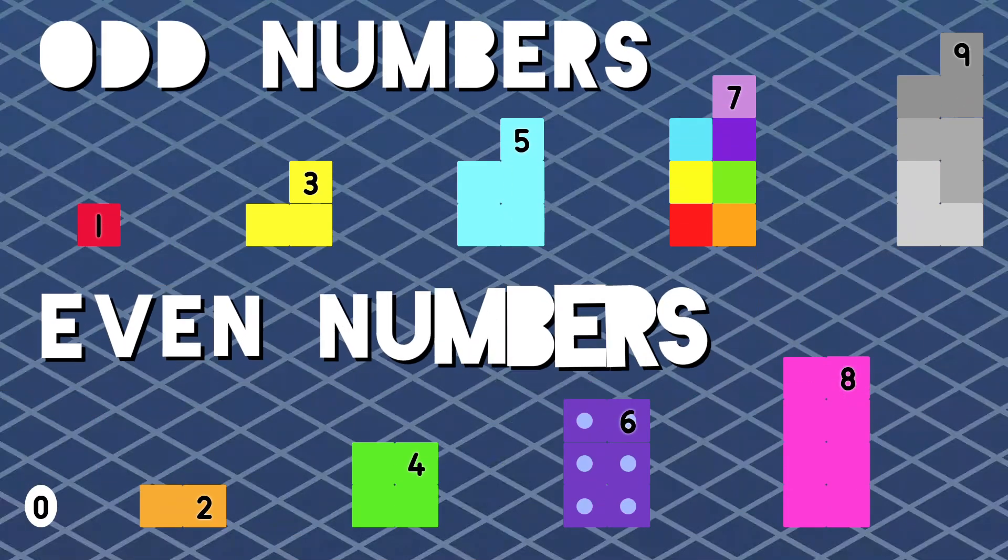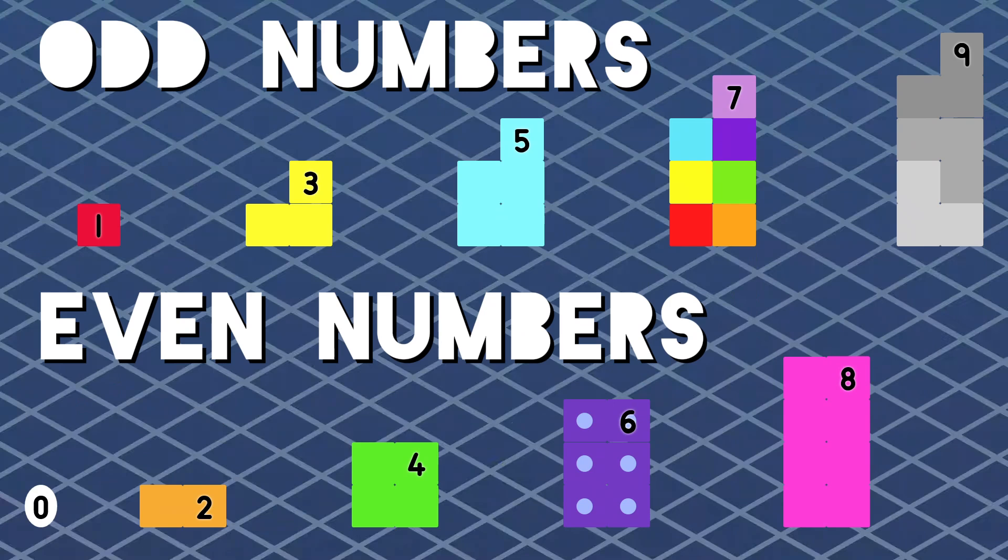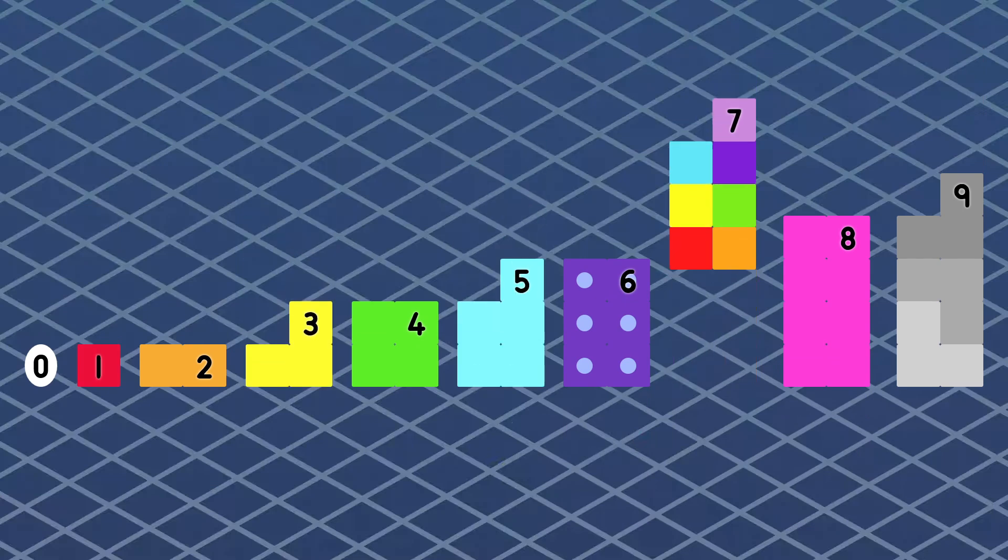We're the odd and even numbers and we're here to show you the difference between us and are we divisible by 2. The odd numbers are 1, 3, 5, 7,